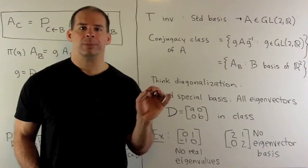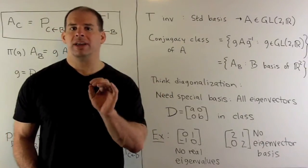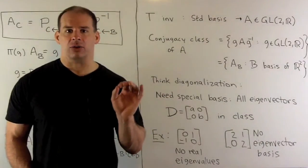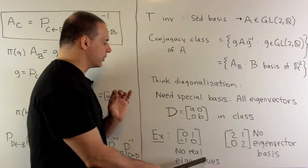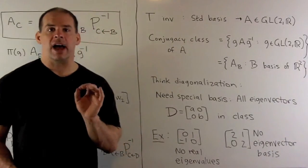Now, in general, we're not going to be able to put every matrix in diagonal form. So, for example, if I consider this matrix here, we have no real eigenvalues. So, there's nothing to put on your diagonal if you went to diagonal form.